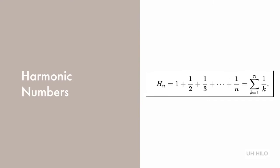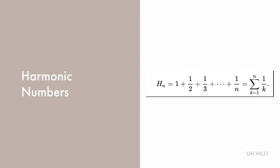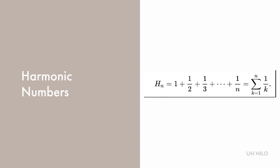In mathematics, the nth harmonic number is the sum of the reciprocals of the first n natural numbers. According to Knuth, the sum does not occur very often in classical mathematics, but it comes up frequently in the analysis of algorithms.